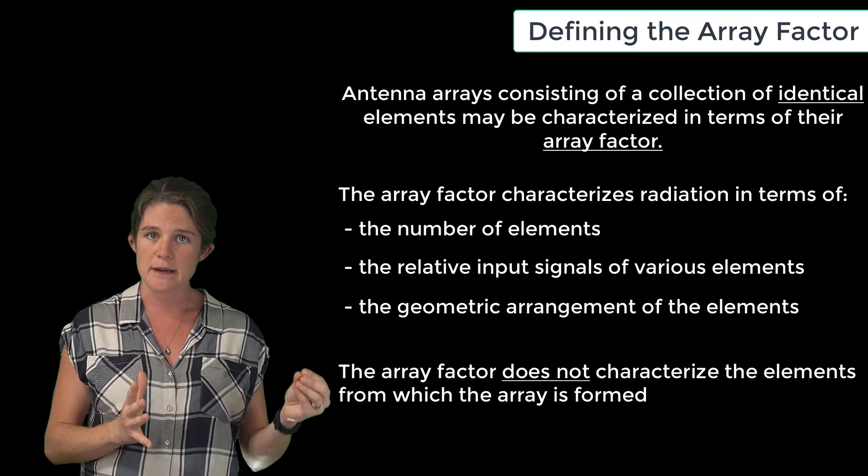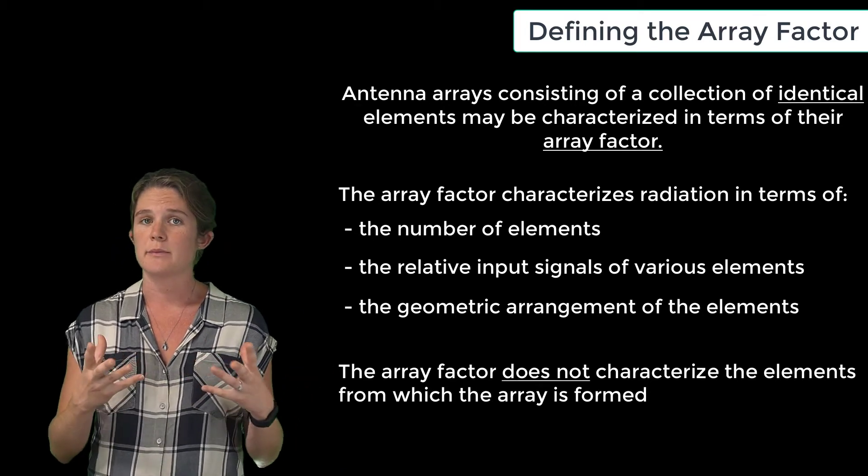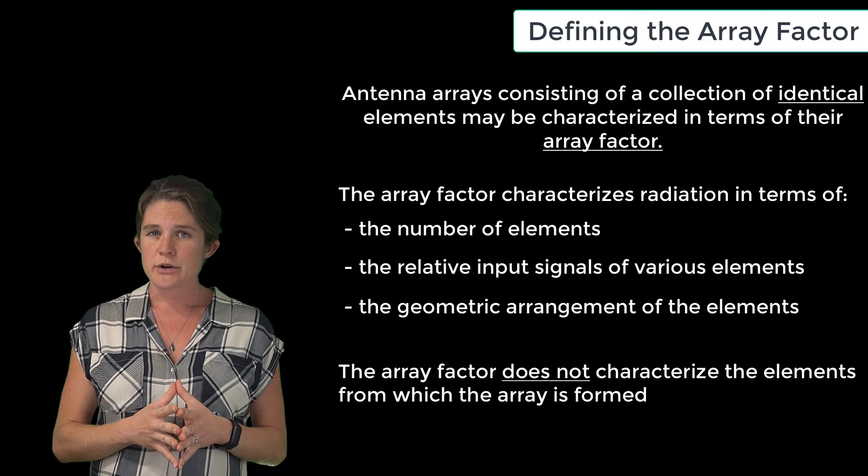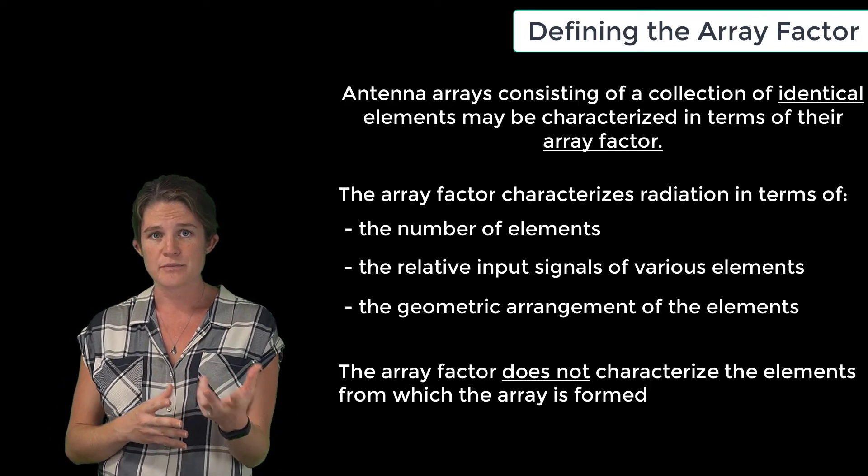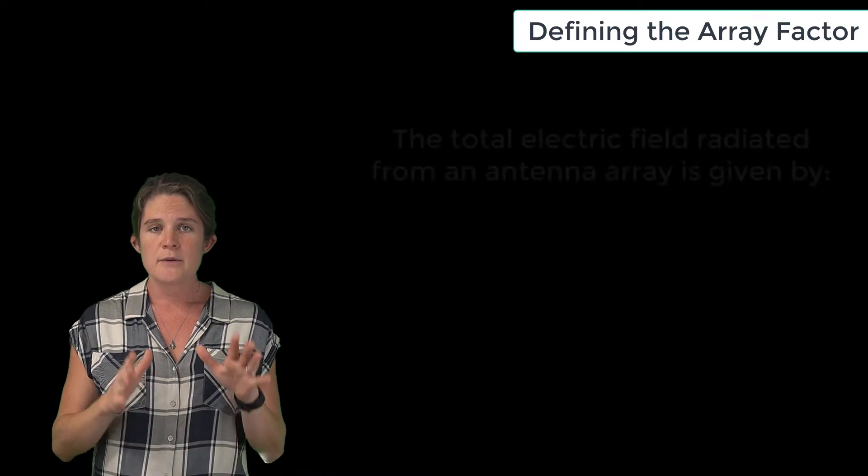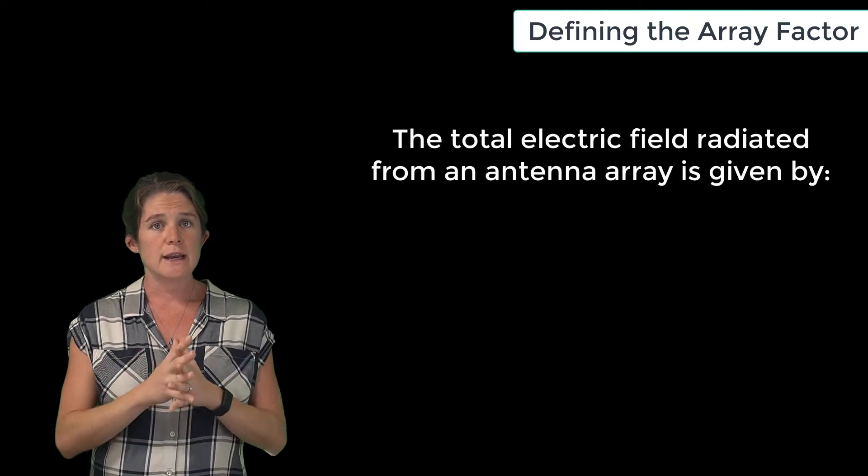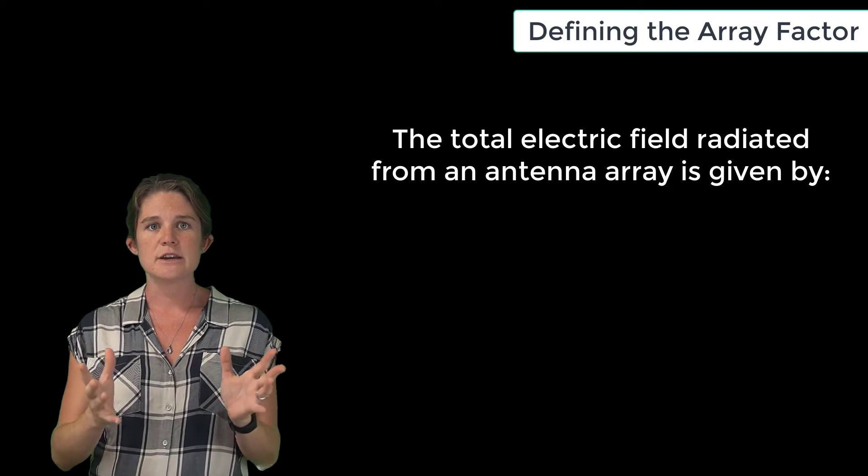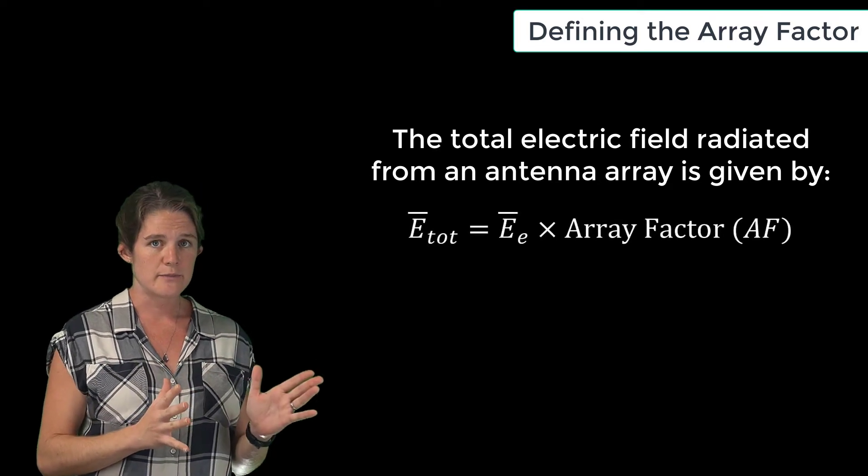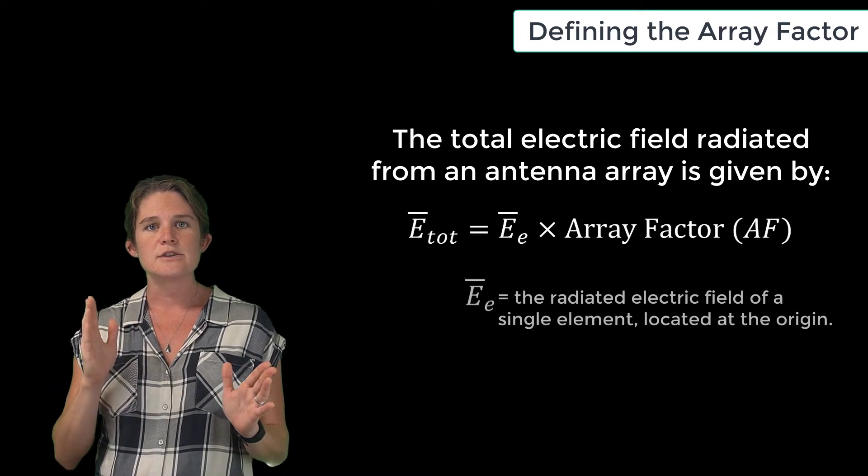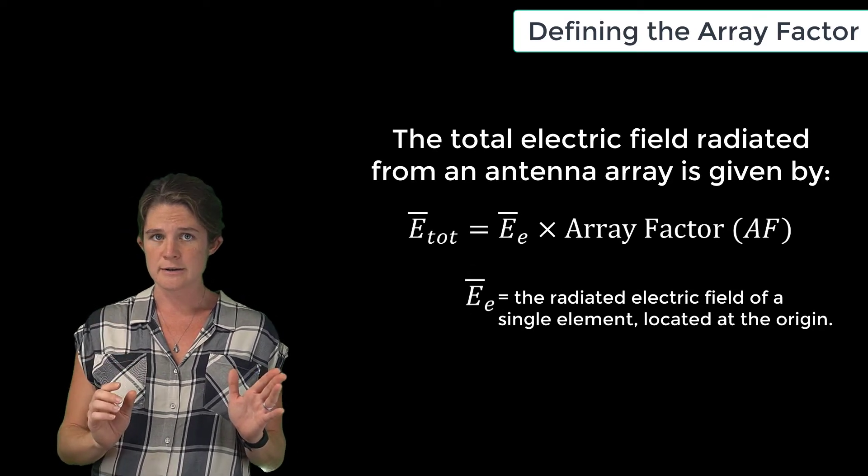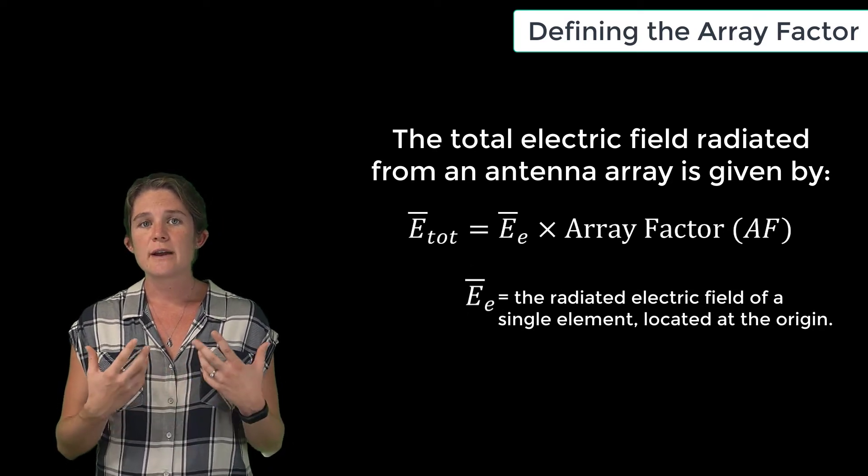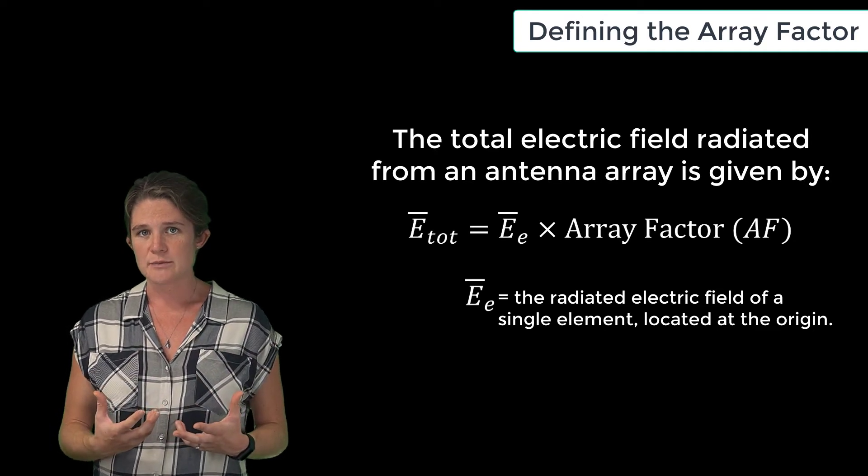The array factor therefore does not depend at all on whether you build the array using dipoles or horn antennas or log periodic antennas. Of course, the actual radiated fields do depend on what type of antenna element you use as well as on the array factor. The total electric field radiated from an antenna array is equal to the product of the array factor AF and the electric radiation pattern of a single antenna element located at the origin.